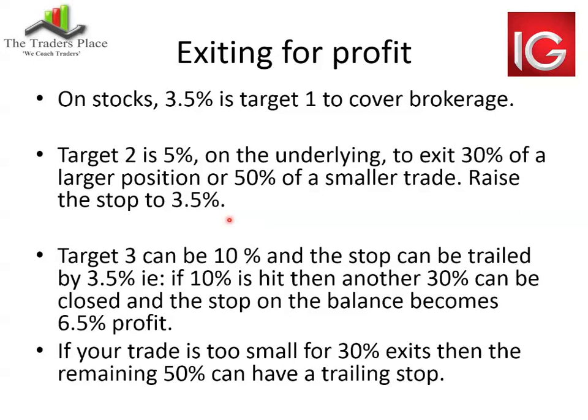Once that 3.5% is out the way, it can be considered target one — really a cost-covering step. Once the trade is free of costs, that little weight is off your shoulders; you've already paid for the trade, it's now free of charge. Target number two would be the 5% mark. The share goes up 5%, then cover 30% of the trade. If you're only trading smaller positions with an average exposure of 10,000 rand, it is better to close out half the trade.